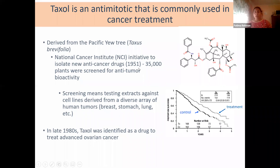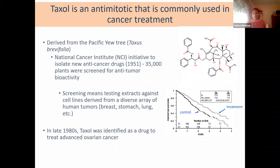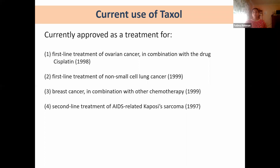Taxol was initially found in 1951 when researchers were examining plant extracts for anti-tumor bioactivity. It was killing cells from a variety of cancers including gynecological cancers, stomach cancer, lung cancer, and prostate cancer. However, it wasn't until the 1980s that taxol was actually identified as a drug that could be used in clinics, with its first clinical use in the 1980s. It is currently a first-line treatment for many gynecological cancers and non-small cell lung cancer, and is used as a second-line or combination treatment in many others.